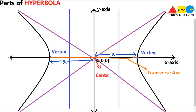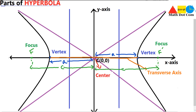Then we have another important part of the hyperbola — the foci. Just as we have two vertices, similarly we have two foci. If I mark it on the diagram, one focus will be here at F and another focus at F'. The foci lie inside the curve and they actually define the hyperbola. Each focus is at a distance of 'c' from the center on both sides.